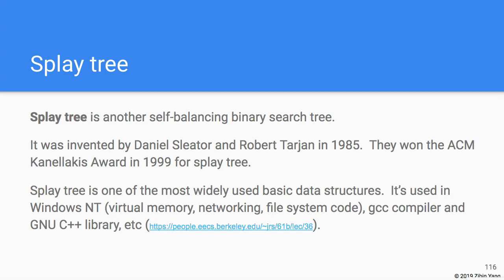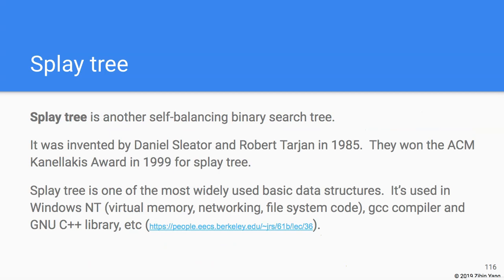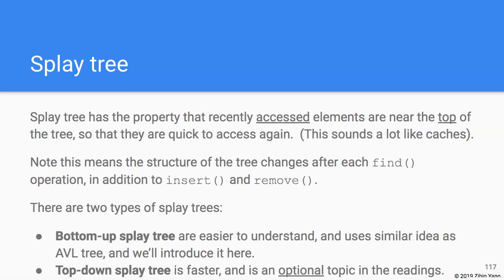The reason splay trees are so useful is that recently accessed elements in the tree are kept near the top. When elements are near the top, it doesn't take much traversal to reach them, so they are very quick to access again. This sounds a lot like caches, and in at least some applications, that's exactly how splay trees are used.